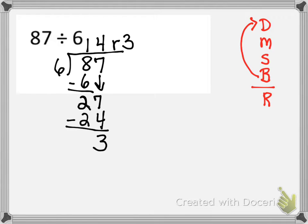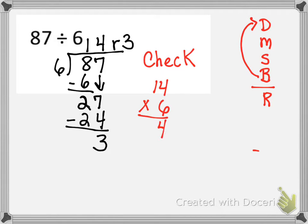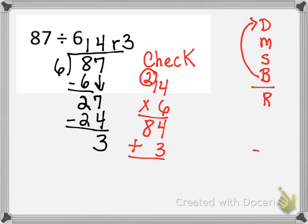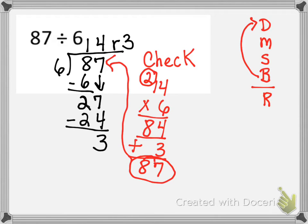Now we have to check using the inverse operation of division — multiplication. We take 14 and multiply it with 6: 6 times 4 is 24, write 4 and carry the 2 tens; 1 times 6 is 6, plus 2 is 8 — so we have 84. But inside the division house there's an 87. This problem had a remainder, so we add it on: 84 plus 3 is 87. That's the answer inside our division house — we got this right. Good job!